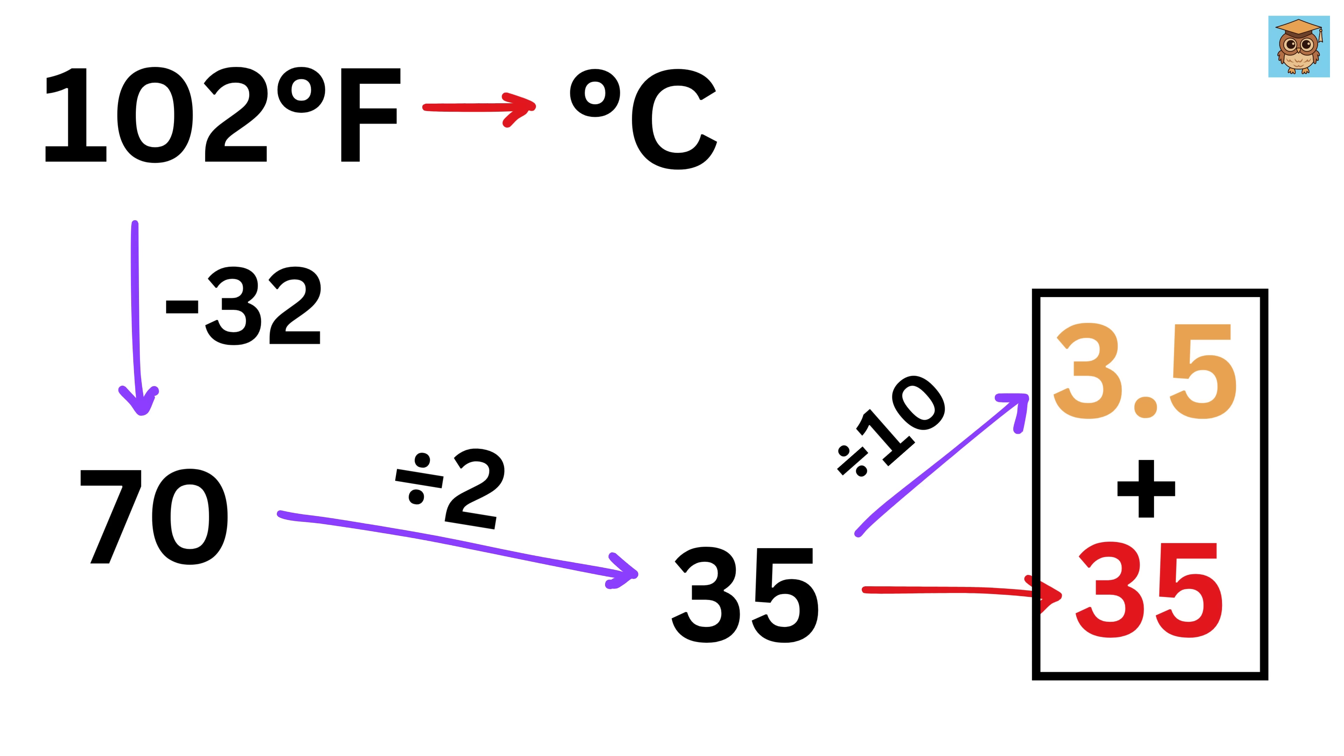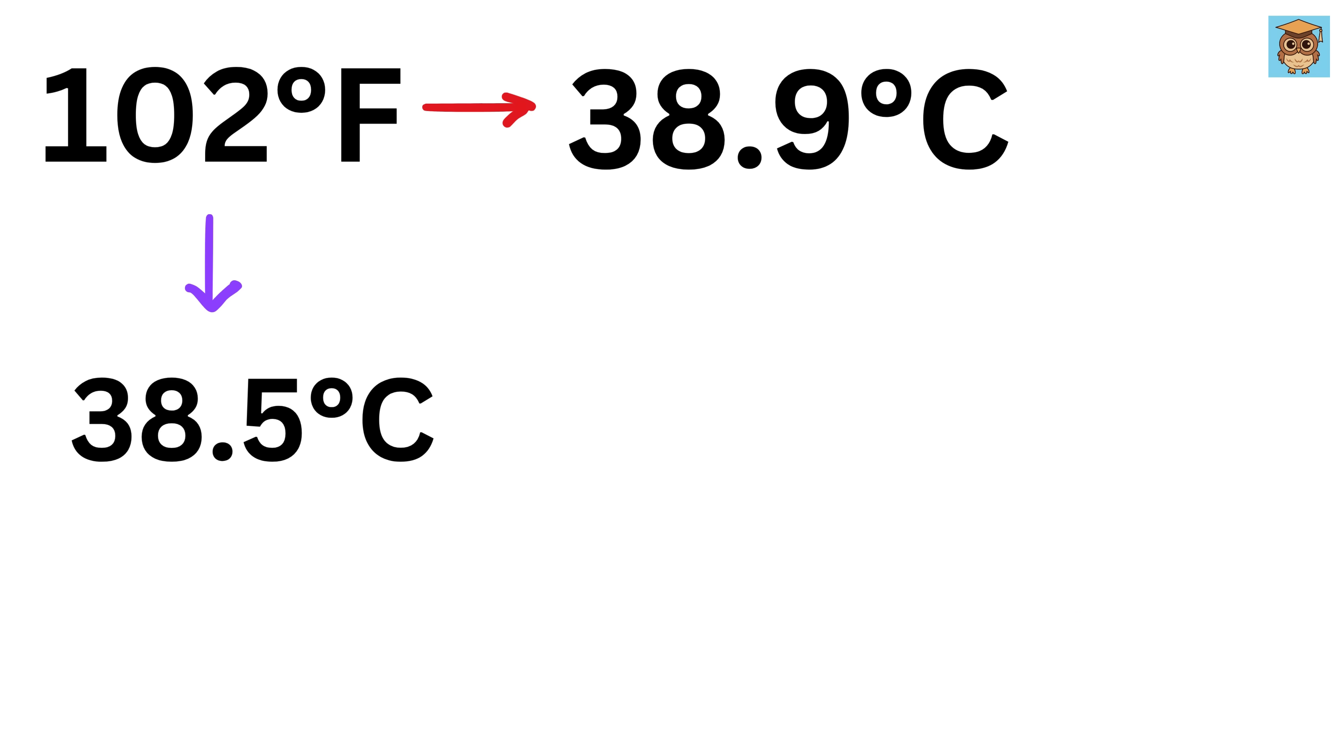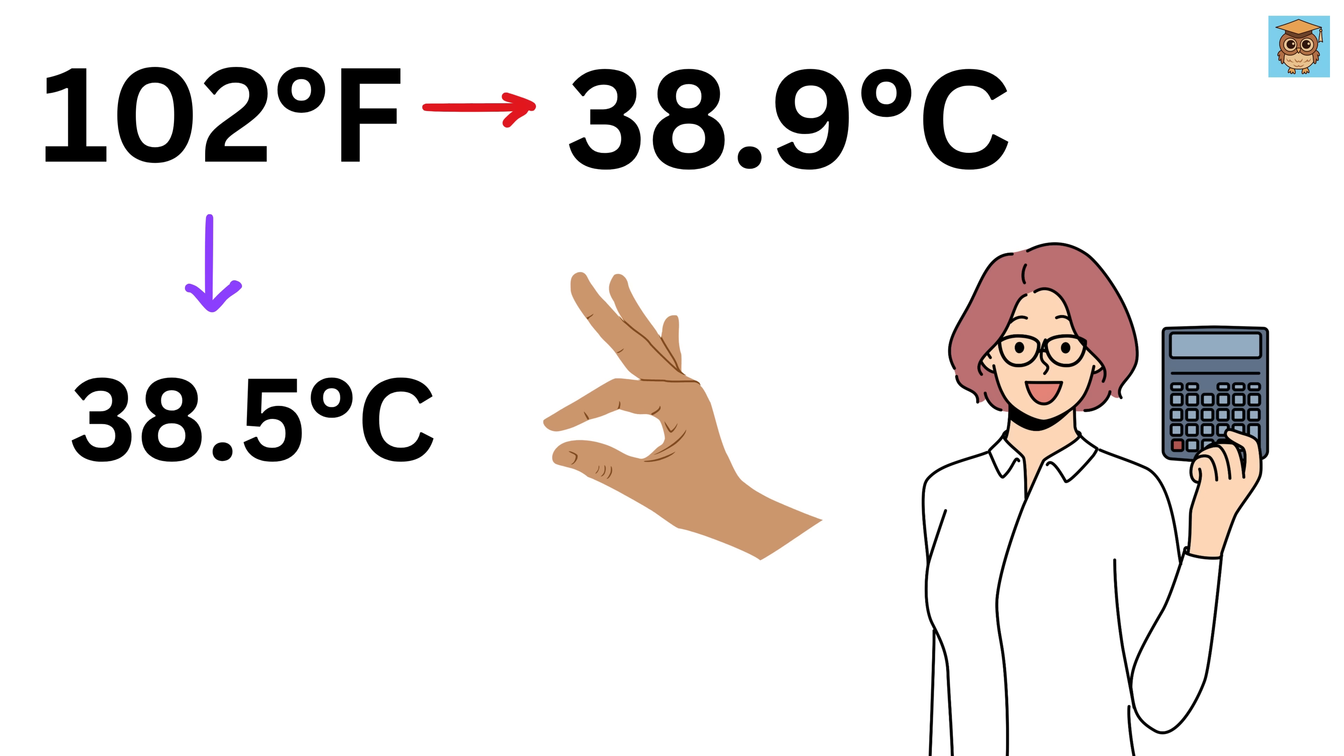Finally add both of them to get 38.5 as our final answer. So 102 degree Fahrenheit is approximately 38.5 degrees Celsius. Actual value is 38.9 degrees Celsius, which is very very close to our answer. Now that was faster than a calculator.